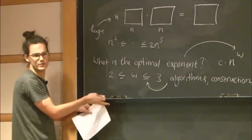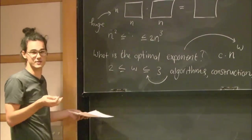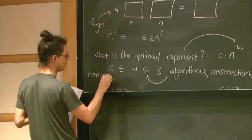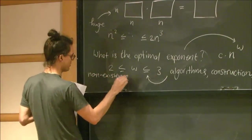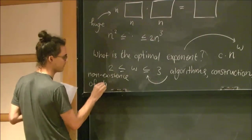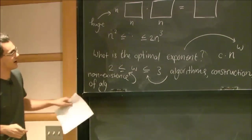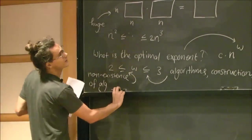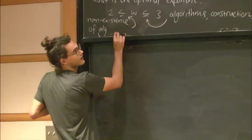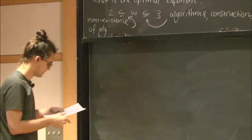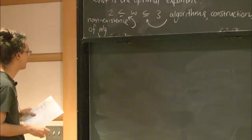And here, these lower bounds, they correspond to non-existence of algorithms or obstructions. So non-existence of algorithms or obstructions. That's the lower bounds. So let me tell you what's known. I hope you can see this. What's known?